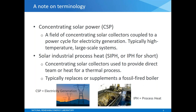A quick note on terminology. I'm going to use CSP, or concentrating solar power, to refer to electricity generation projects, and solar industrial process heat, or just IPH for short, for process heat applications. Both CSP and IPH systems use concentrating collectors to convert solar energy into heat. CSP systems typically operate at higher temperatures and deliver heat to a power cycle running a steam turbine for electricity generation, while process heat systems operate at lower temperatures and deliver heat to some industrial process.